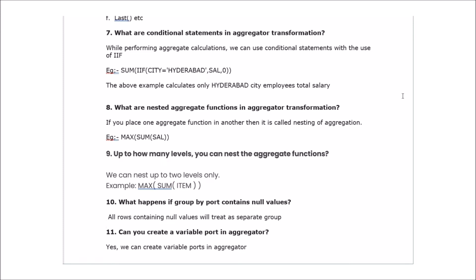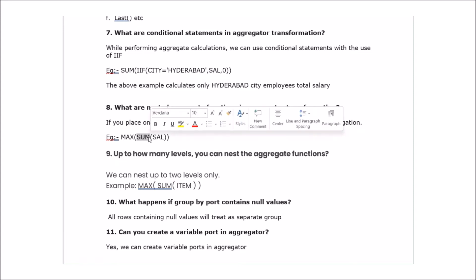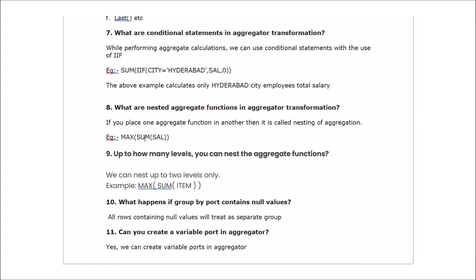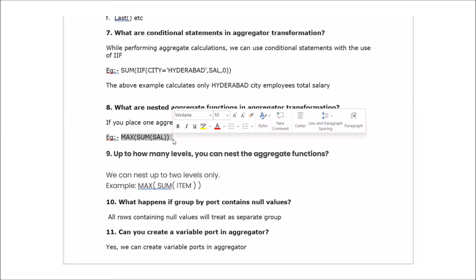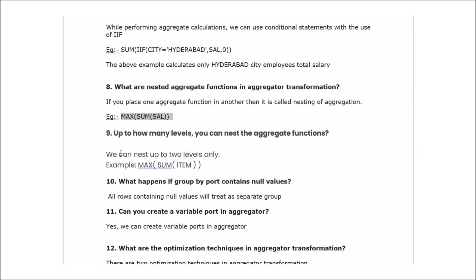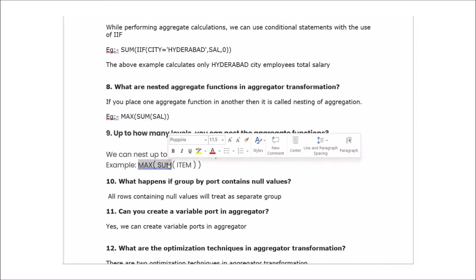The next question: what are nested aggregate functions in aggregator transformation? If you place one aggregate function inside another, it is called nesting of aggregation. For example, using MAX as the outer aggregate function and SUM as the inner one — MAX(SUM(...)). You can nest only up to two levels. Inside SUM you cannot write one more aggregate function, as two levels is the maximum allowed.